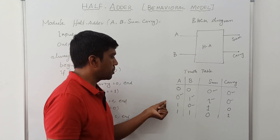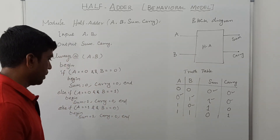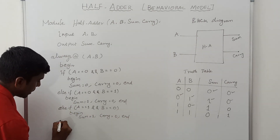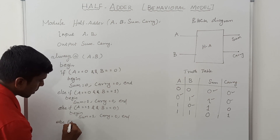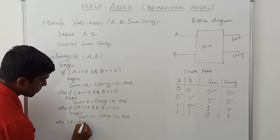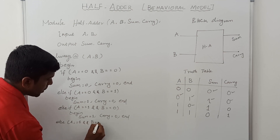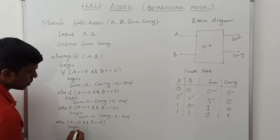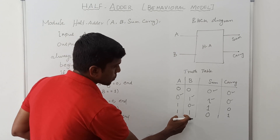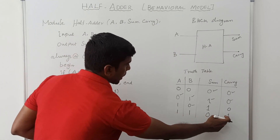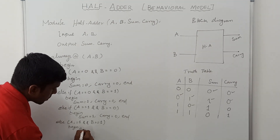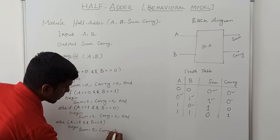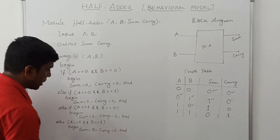So far we have discussed three conditions. Now we check the final one. Else: A equals 1 and B equals 1. Begin the loop: if this condition is true, sum value is 0 and carry value is 1 — sum equals 0, carry equals 1. End the loop.